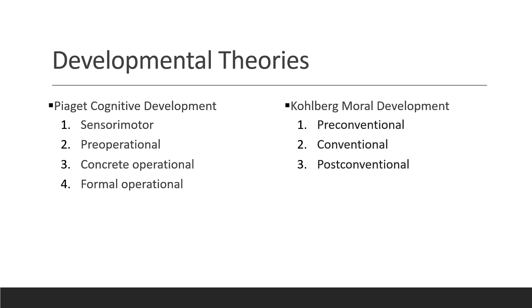The pre-operational stage is two to six years old. Here, the child thinks symbolically, uses imagination and memory, and engages in fantasy and make-believe when playing. These young individuals are very egocentric — to them, they are the center of the universe and they are not able to understand others' viewpoints.